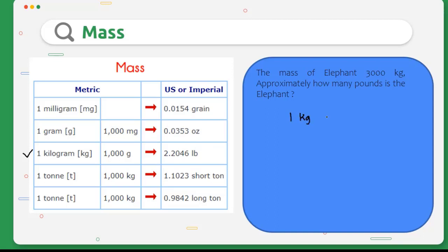We can write 1 kg equals 2.2046 pounds. For 3000 kilograms of elephant equals x. We have to find the value of x. We can do cross multiplication and we will find x equals 2.2046 times 3000.